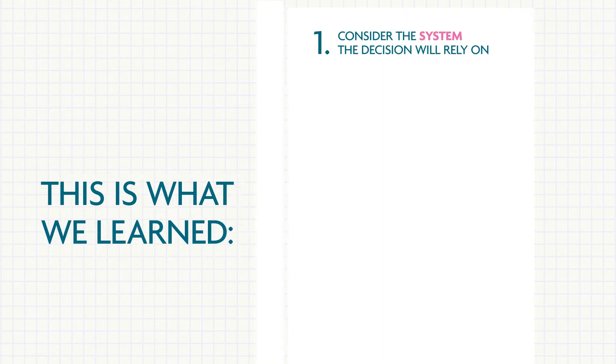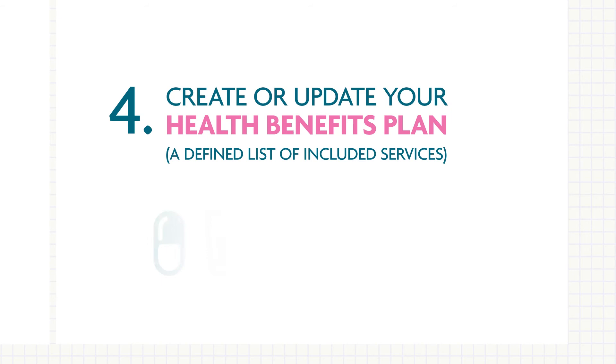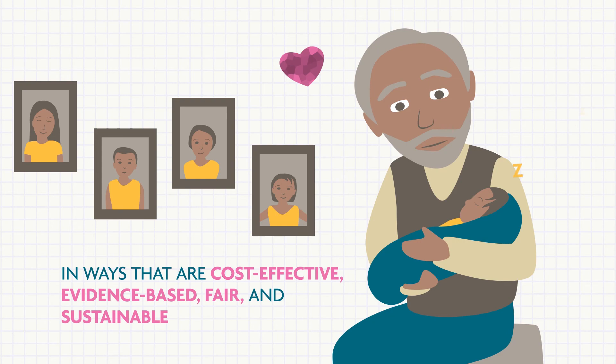Consider the system the decision will rely on. Consider the evidence on what's been done before. Identify constraints and develop solutions. Then create or update your health benefits plan. This process can help you prioritize the benefits that are vital to your community in ways that are cost-effective, evidence-based, fair, and sustainable.